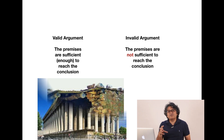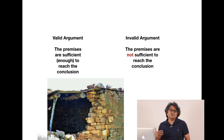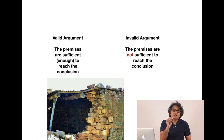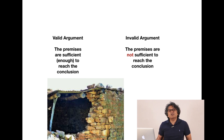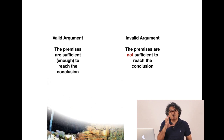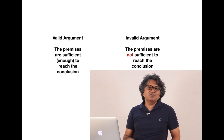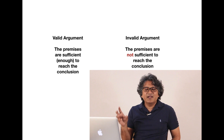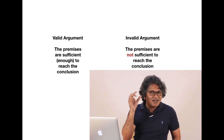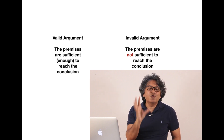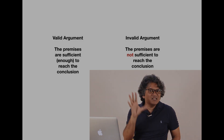From this we can directly move to what an invalid argument means: it is when the premises are not sufficient to reach a conclusion. For example, suppose a conclusion requires three premises, but in an invalid argument only two are given — the third one is missing. Do not think an invalid argument is completely nonsensical; 'invalid' here has a very specific meaning: the premises are not leading to the conclusion — something else is required. Keep this in mind, because this is the crux of most critical reasoning questions.